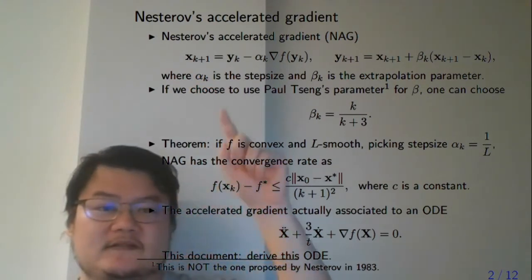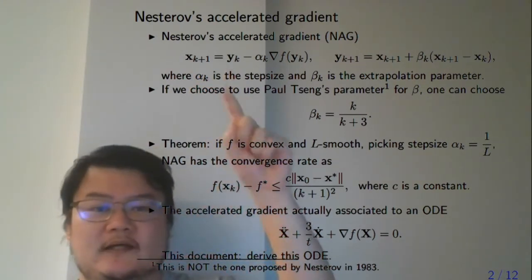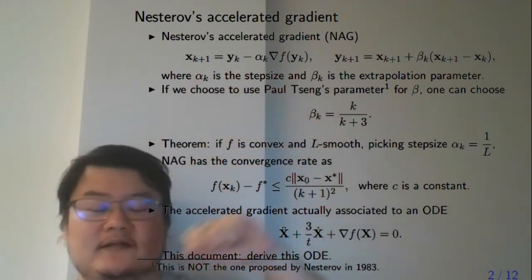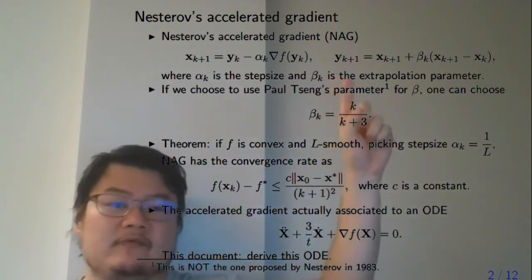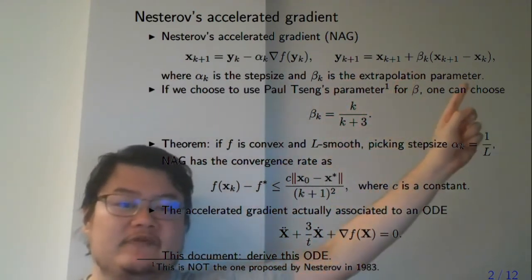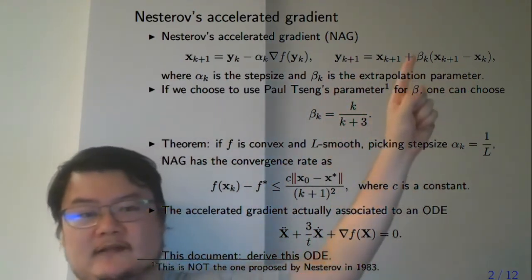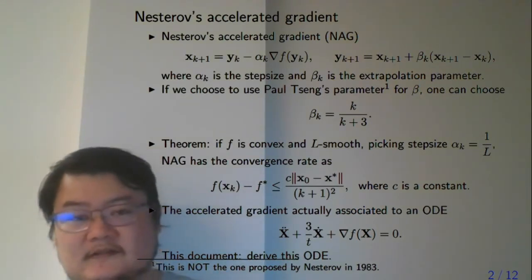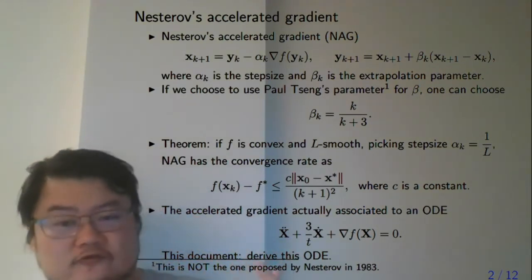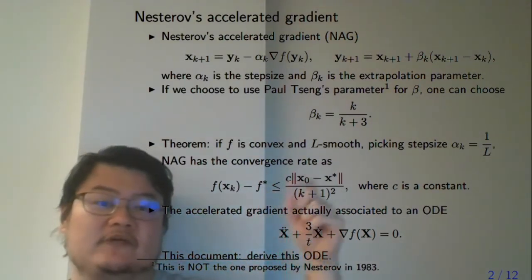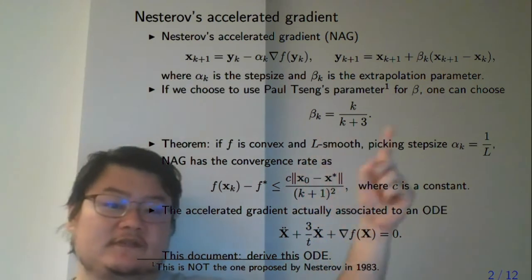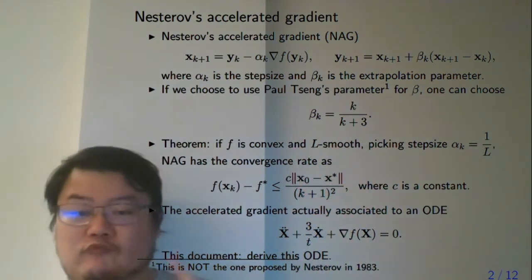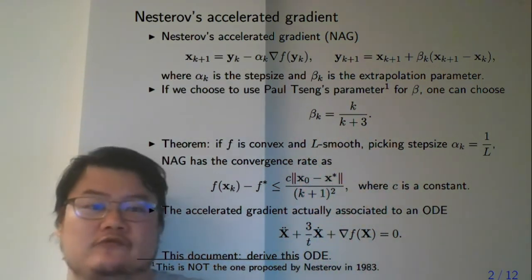You create another sequence y, and you update x using y in the gradient update. Then you extrapolate y using x and the previous point. Beta here is the extrapolation parameter. There are many ways to choose these parameters, and here we are going to use this particular scheme to choose beta — it's just one of the ways.